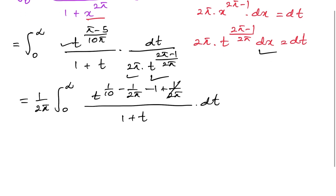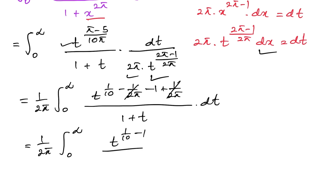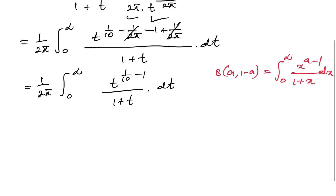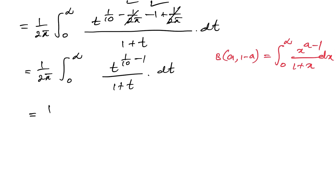We can simplify the powers of t. The π terms cancel, giving 1 over 10, and after further cancellation we get t to the 1 over 10 minus 1. So we have 1 over 2π times the integral from 0 to infinity of t to the (1/10 minus 1) over 1 plus t, dt. Now let us apply the beta function.